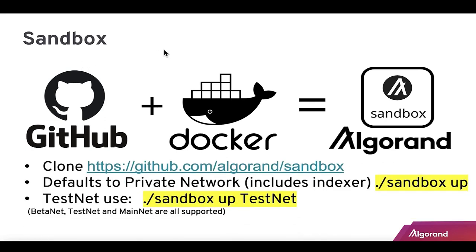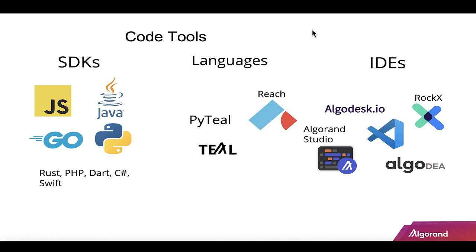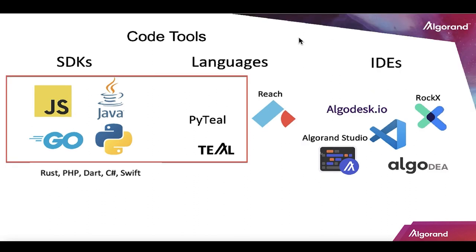Sandbox is a great tool. You can run your own node, but even better is creating an instance in Docker. Install Docker, clone the algorand/sandbox GitHub repository, and then access any network — private network, betanet, testnet, mainnet. Just run 'sandbox up testnet' and you're up and running with a node you can program to. You'll need a token and URL — both found in the README file. There are lots of SDKs, and everything circled in red is done by Algorand; the rest is ecosystem.